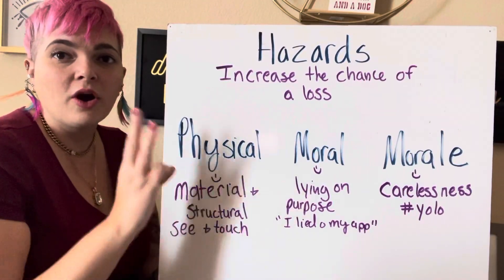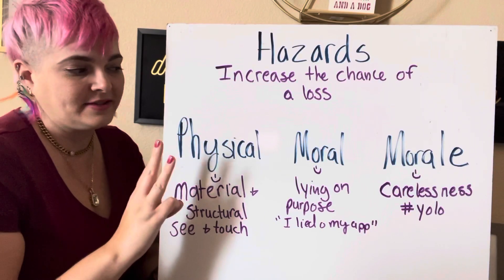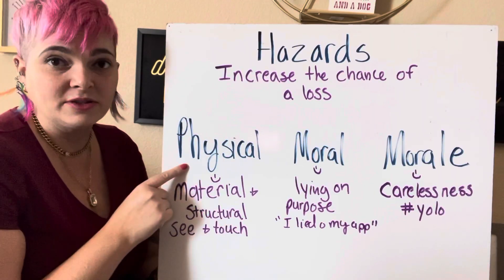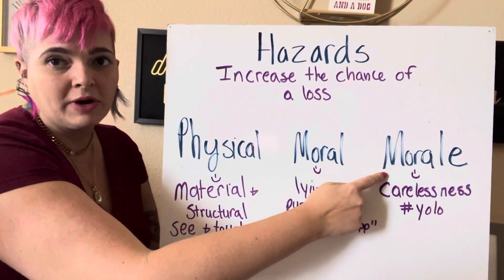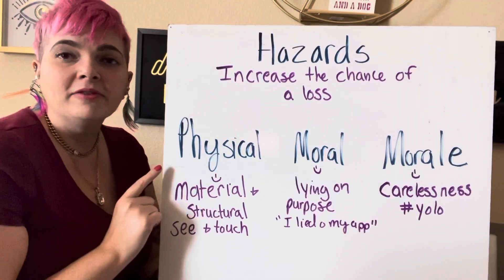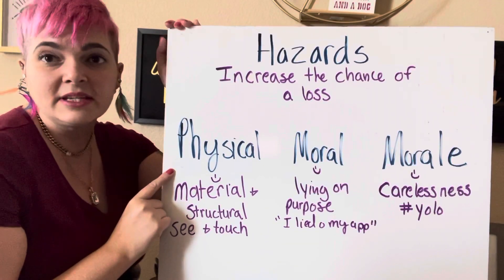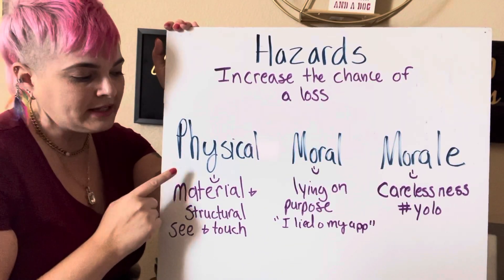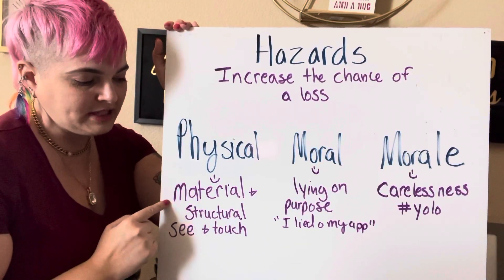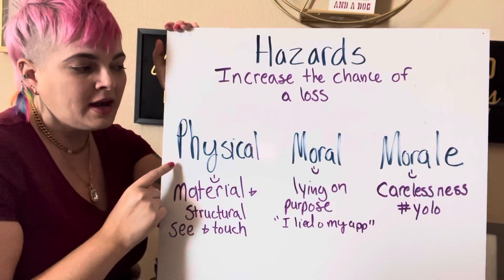There are three types of hazards: physical, moral, and morale. A physical hazard is the easiest one — it is something that is material and structural.